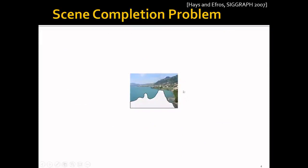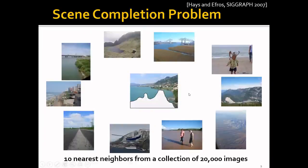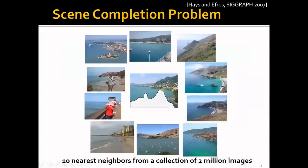You will find the 10 nearest neighbors from a collection of 20K images. But if you're just finding the nearest neighbor from a small set of images, you may not get what you want — none of these images may be similar. But if you can dramatically increase the size of the collection, say 2 million images, there's a much higher chance that you can get what you want. In fact, the image most similar to yours is right here, and you can use it to complete the scene.